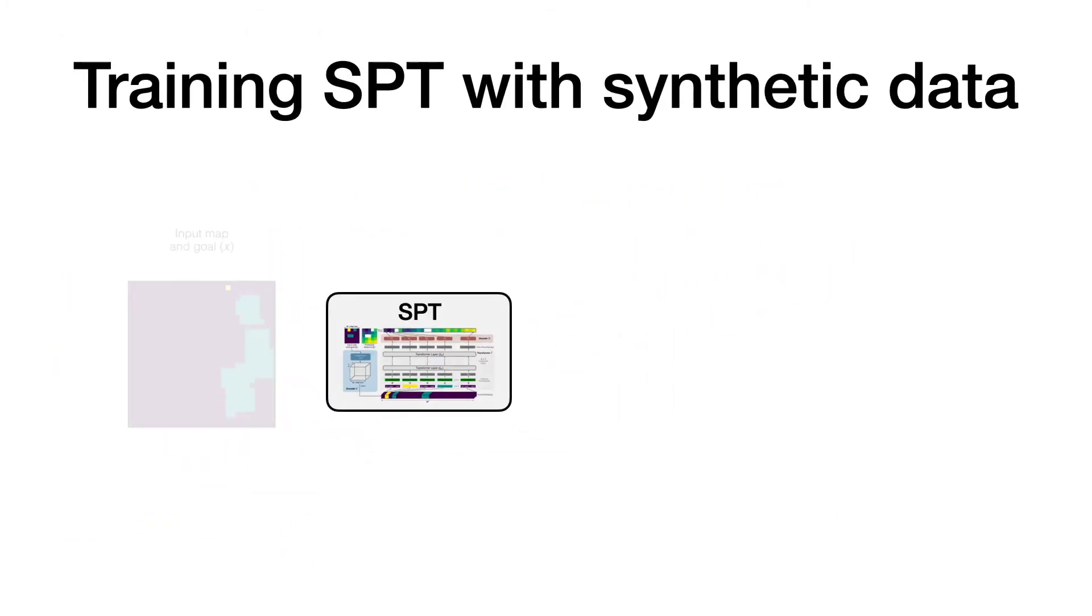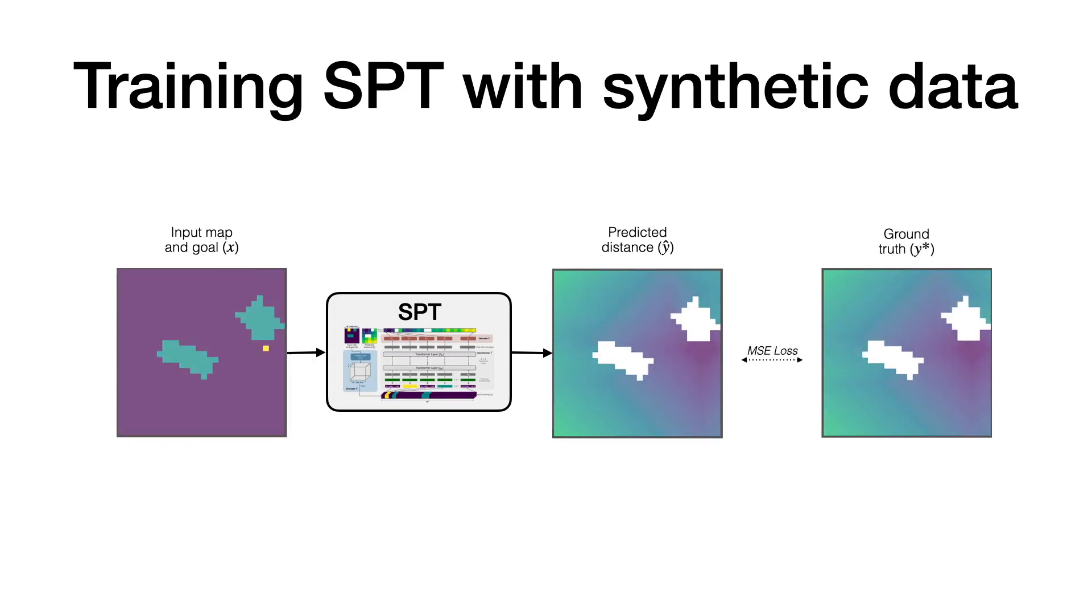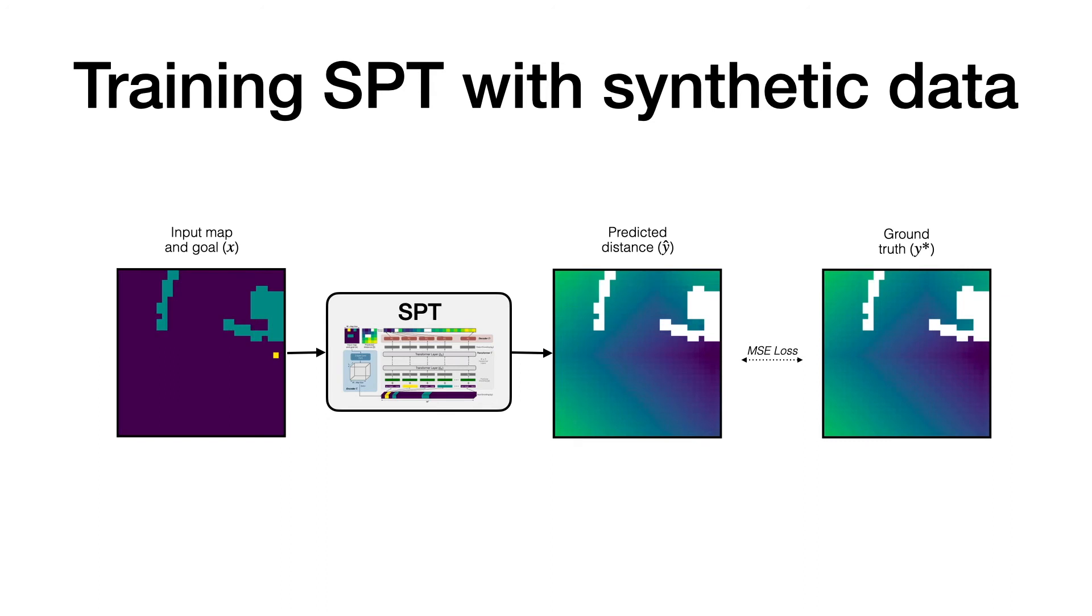We train the SPT model with standard supervised learning using synthetic data. For every input map and goal, we predict the action distances from all navigable locations and minimize the mean squared error loss.